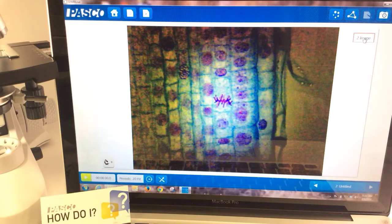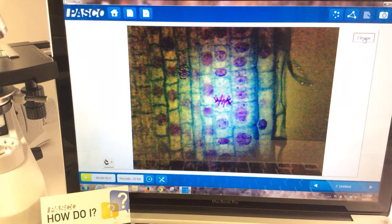How do I measure what I've captured in an image? On the screen you'll see that I'm looking at some cells of an onion root tip via a microscope. I have a digital microscope connected to my computer with SparkView open and I've already captured this image of the cells.